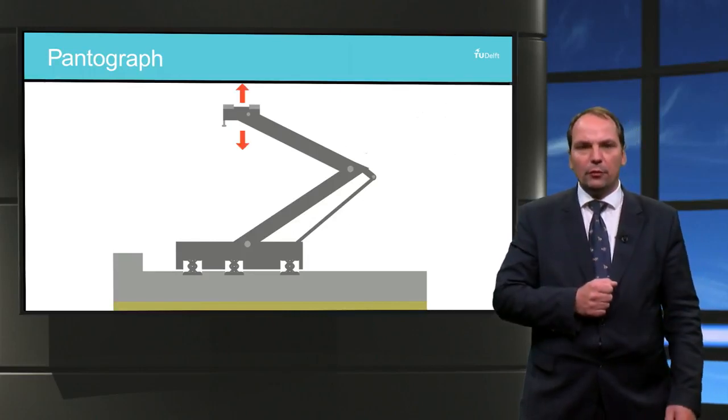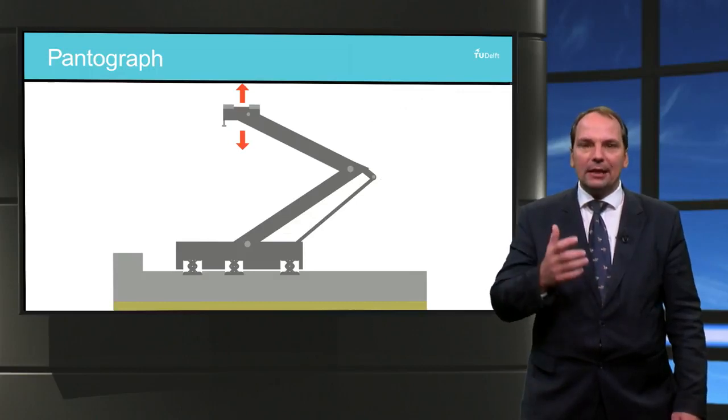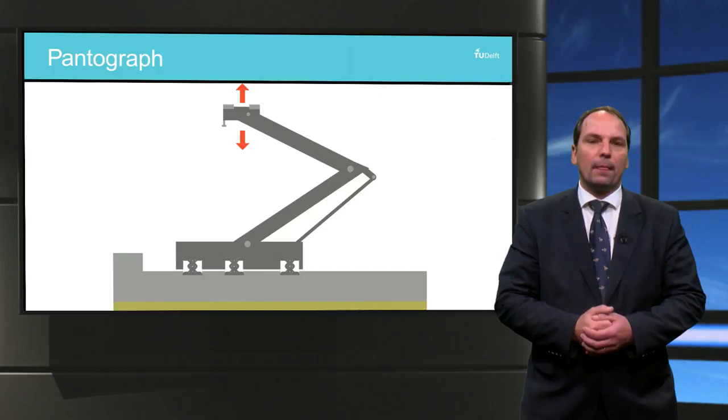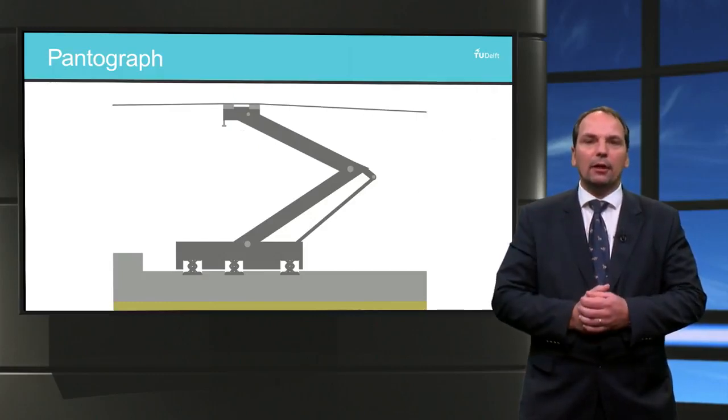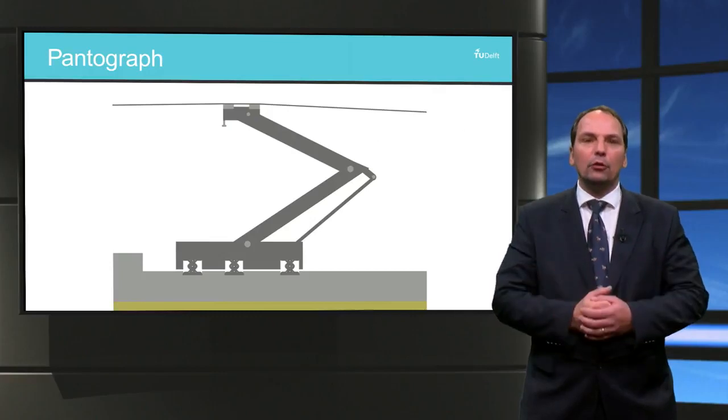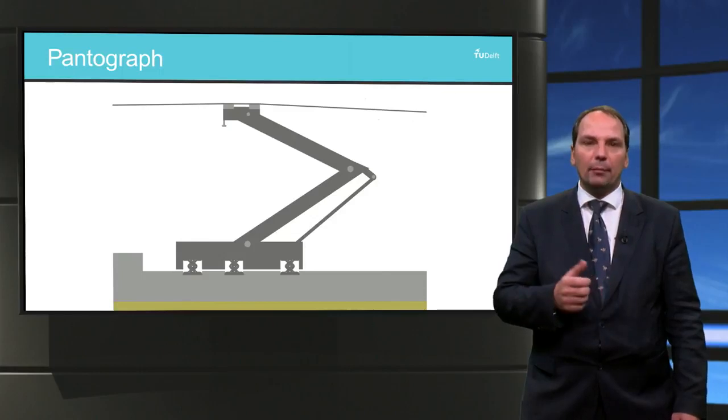The pantograph is a system which contains articulated arms. It can unfold and extend along the vertical axis. The pantograph pushes gently against the catenary. The gentle force necessary to lift the device is often established by air pressure.